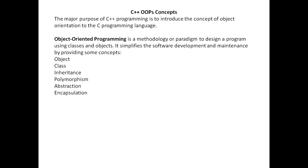What is object oriented programming? It is a methodology to design a program using classes and objects. I often tell students that a class is basically a user defined data type. There are some built-in data types like integer, character, and float — these are already in the language.